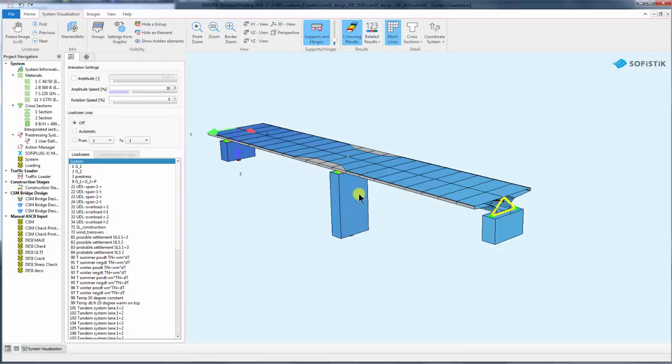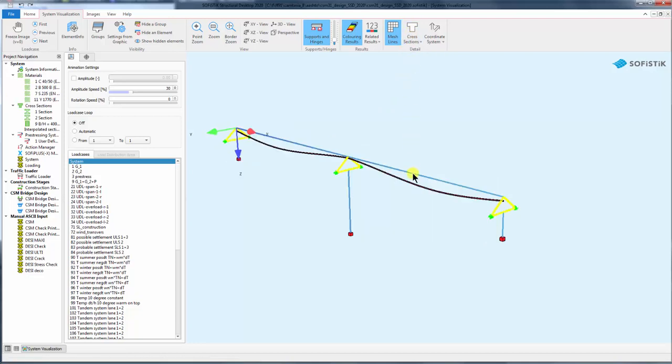In this video we use this little bridge where we have a superstructure section as a beam, a tendon, and a typical support condition.